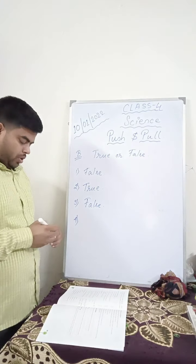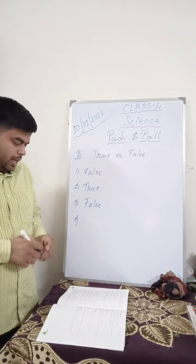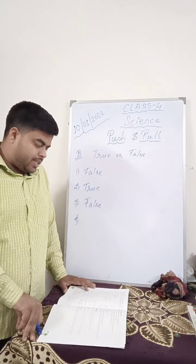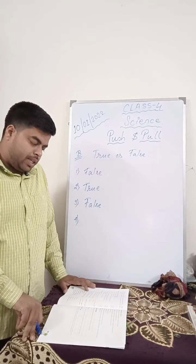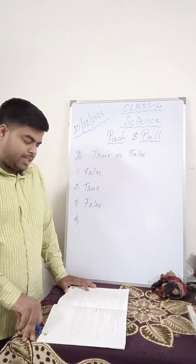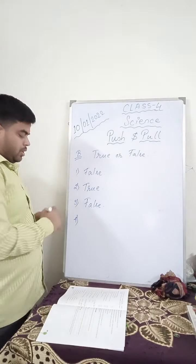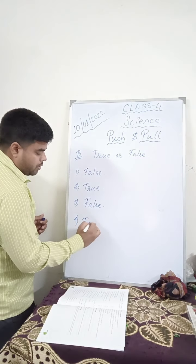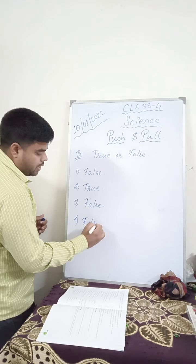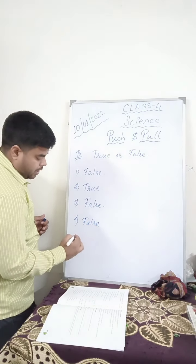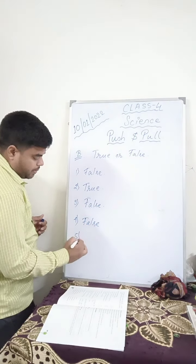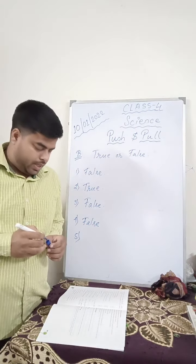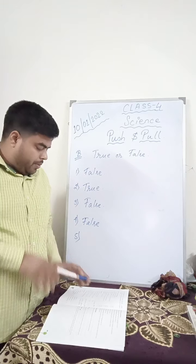Number 4. Magnet can pull materials like plastic and paper towards itself. False. Magnet can only pull substances that have magnetic property or are made of iron, nickel, or cobalt.